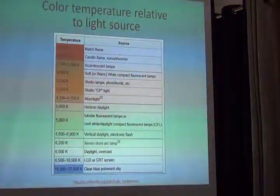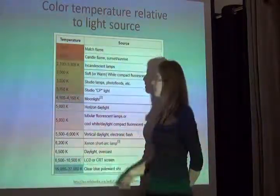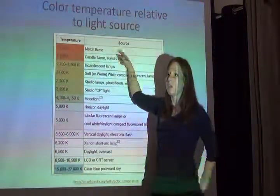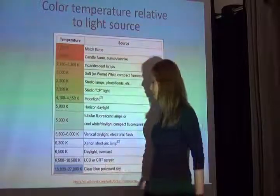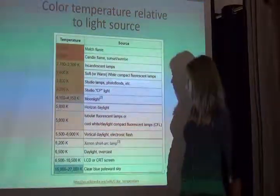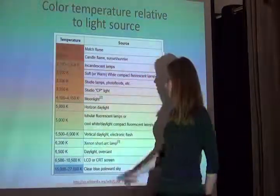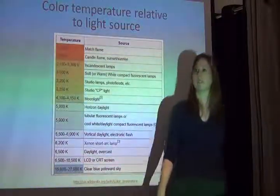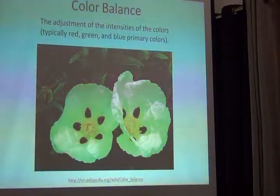Color balance is a little different from white balance — it has to do with the red, green, and blue values that make up an image. We can adjust for that after the fact, after having taken a picture. For example, you can add a green marker to adjust the color balance.